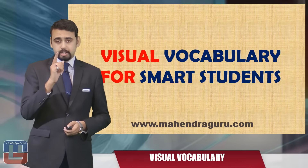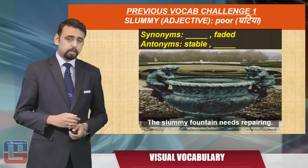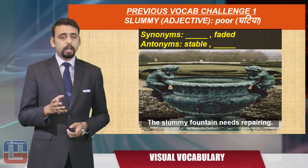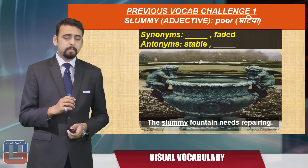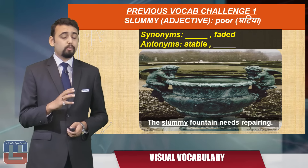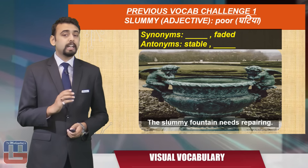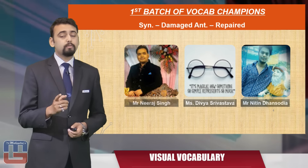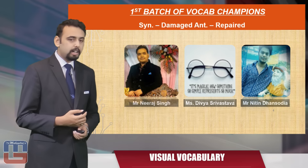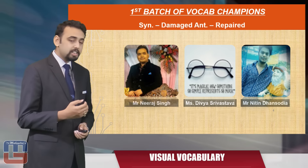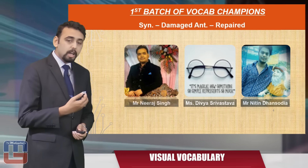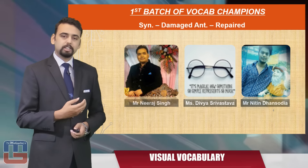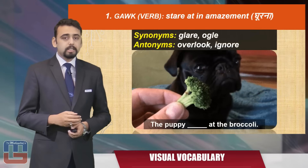Here's the first vocab challenge review. The previous word was 'slummy,' an adjective meaning poor — in Hindi, 'ghatia' or 'buri avastha mein.' The missing synonym was 'damaged' and the missing antonym was 'repaired.' The first batch of vocab champions are Mr. Neeraj Singh, Miss Divya Srivastava, and Mr. Nitin Sanzodia. Congratulations to all of them for being the vocab champions of the first batch.